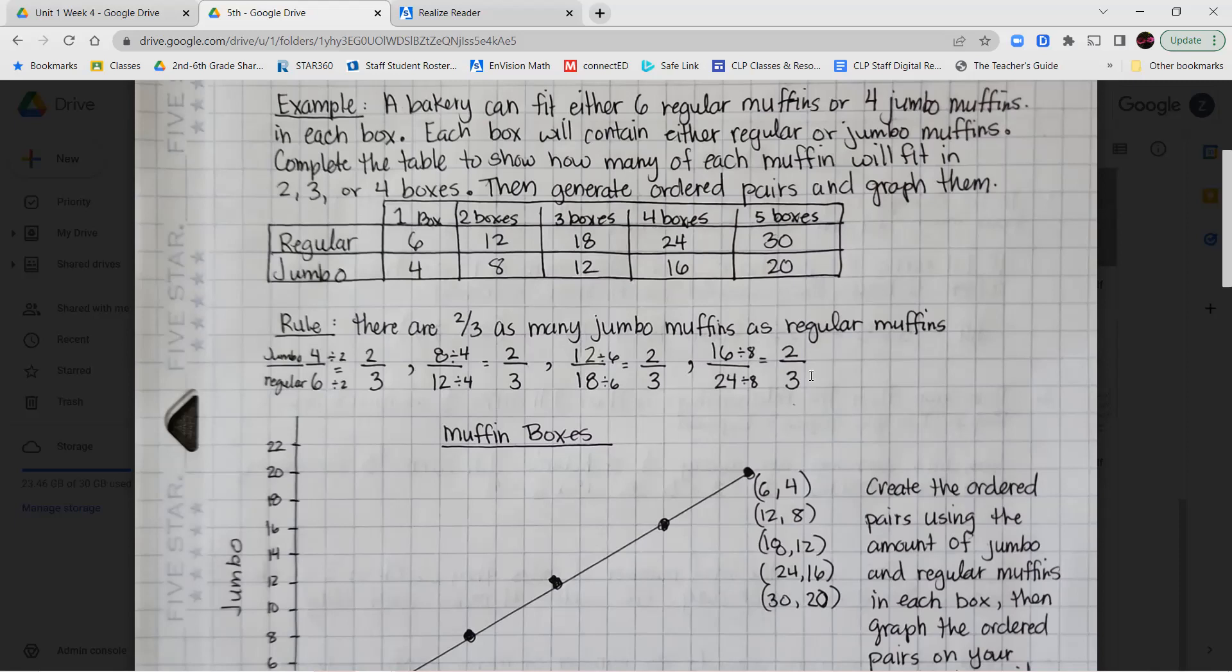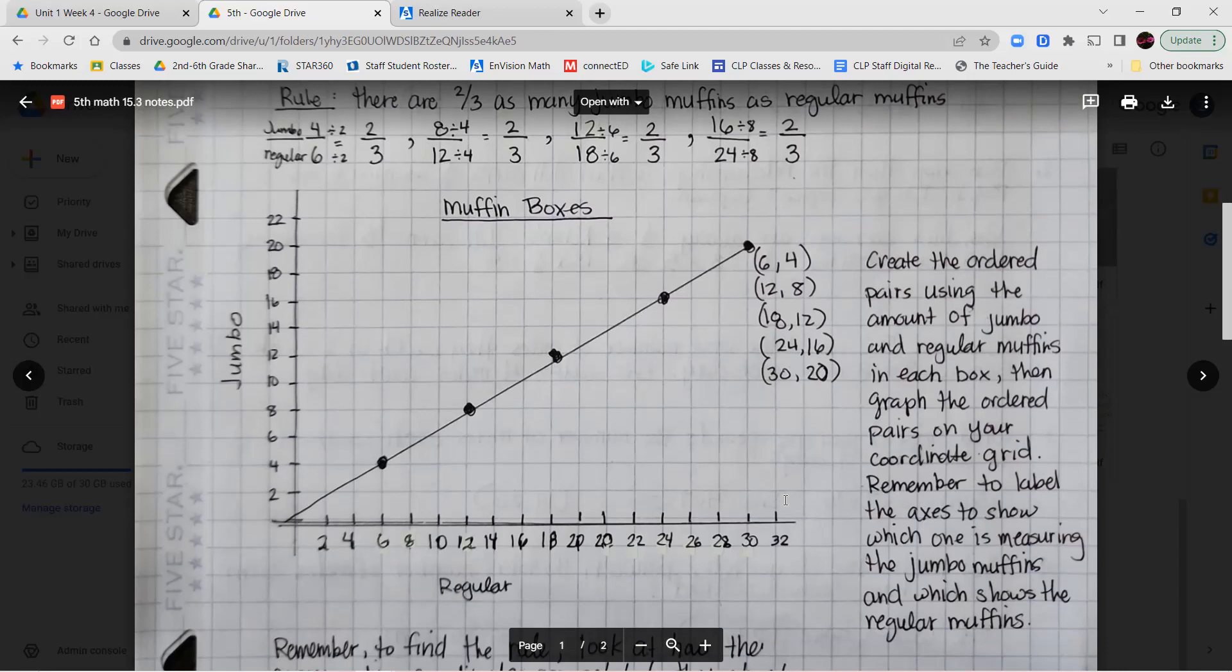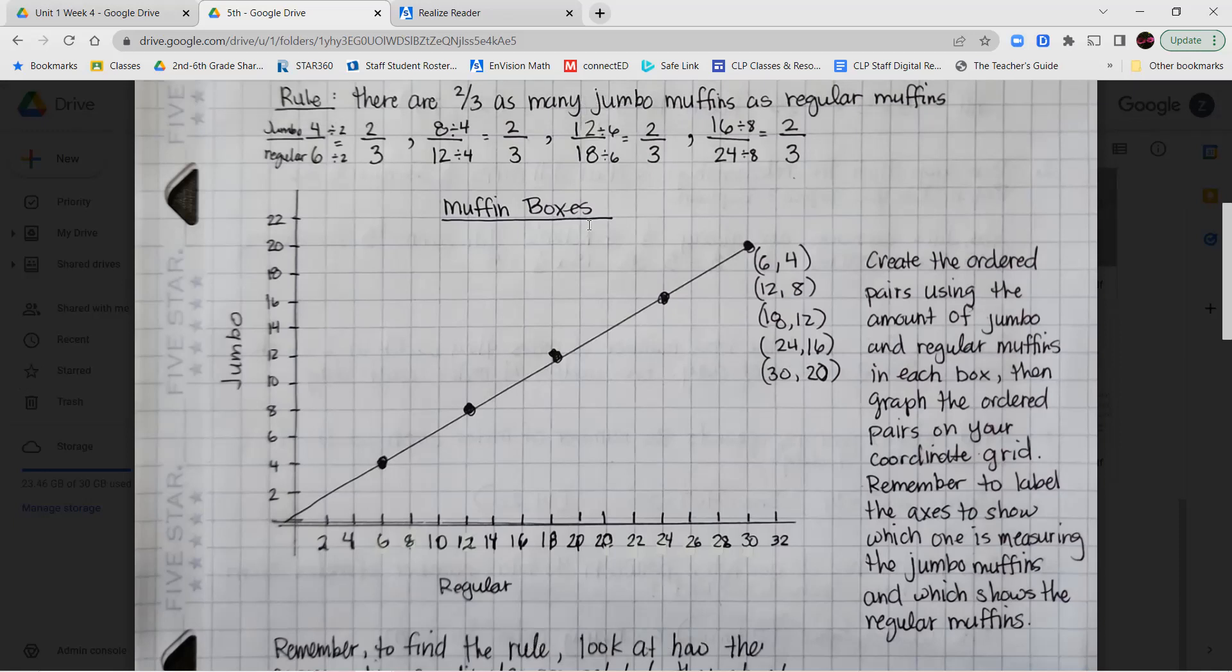So we're going to start graphing these ordered pairs. So I wrote out the ordered pairs over here on the side of my graph. I created my graph, I labeled my axes, my x axis is the regular size muffins, my y axis is the jumbo muffins, and I put a title for the muffin boxes at the top of my coordinate grid.